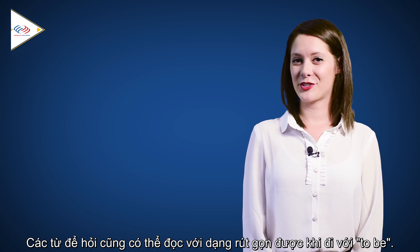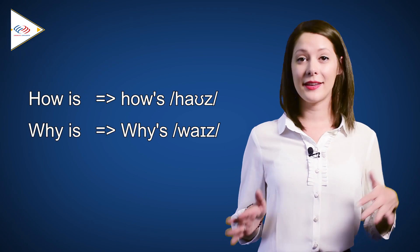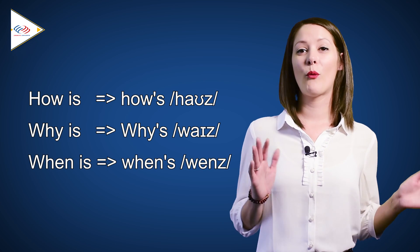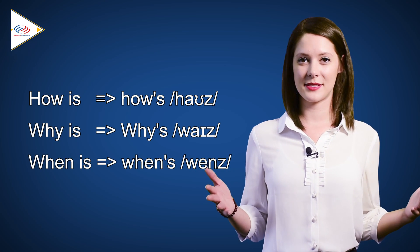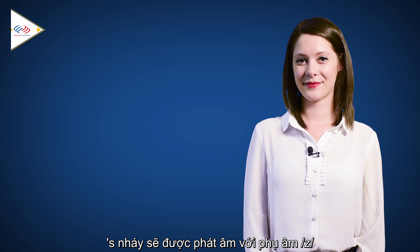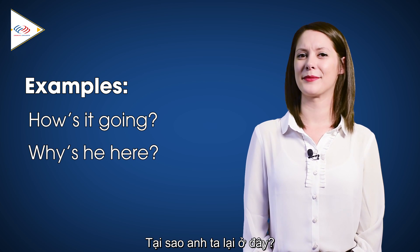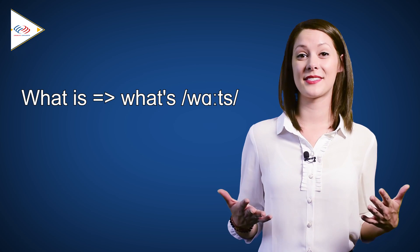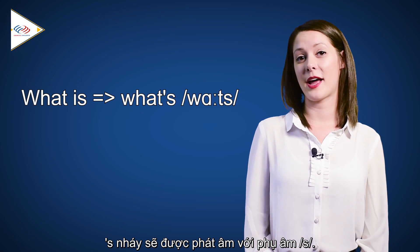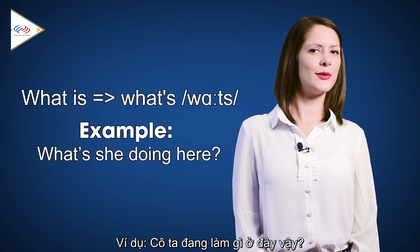Question words are a part of contractions as well. How is becomes how's. Why is becomes why's. When is becomes when's. And the S is pronounced as the Z sound. For example: How's it going? Why's he here? What is becomes what's — the apostrophe S is pronounced as an S sound. For example: What's she doing here?